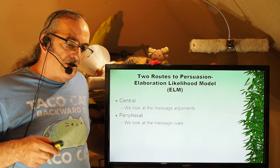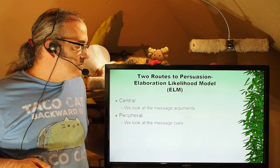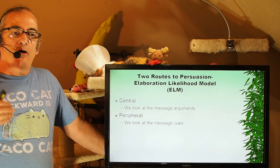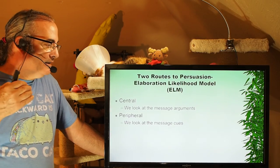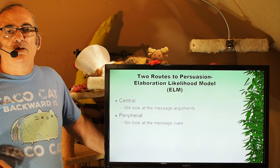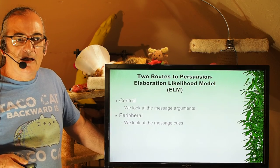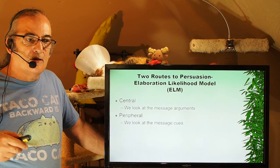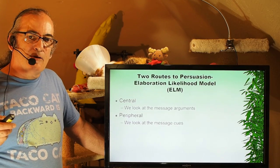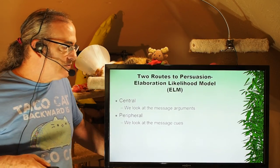What Petty and Cacioppo are saying is: let's craft messages that can appeal to the widest range of audiences. We can use a central route — talking about details and information — where we look at the message arguments. These are highly well-crafted arguments that contain data, reason, facts, and figures that people like to process, especially people of high intelligence or those who are very interested in the message.